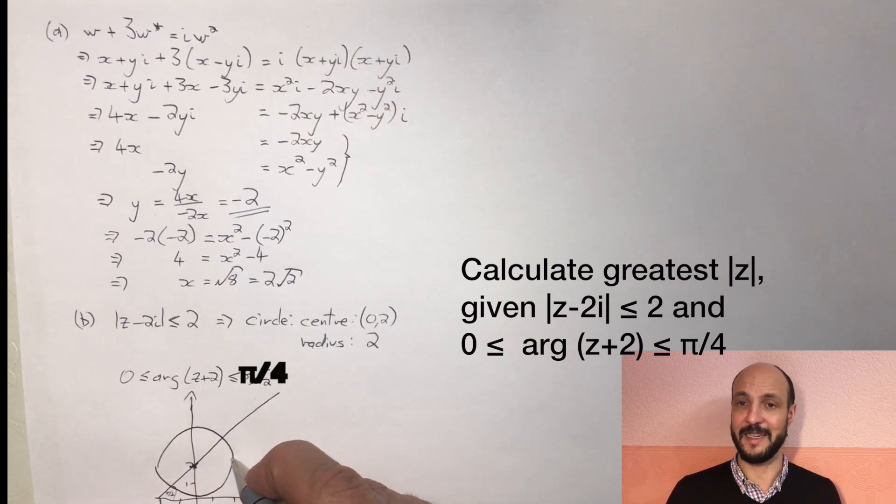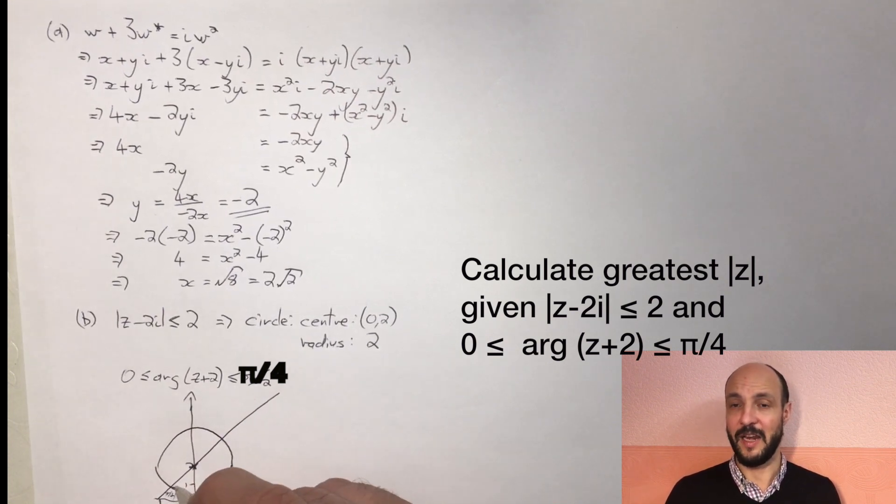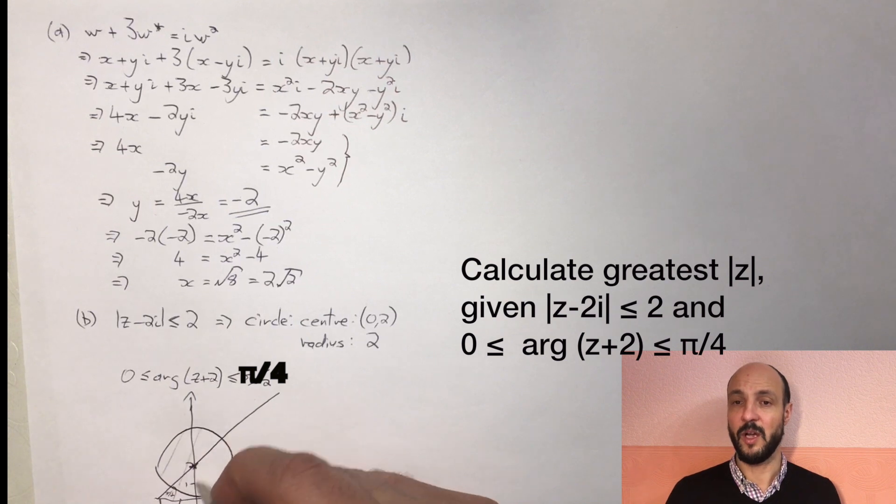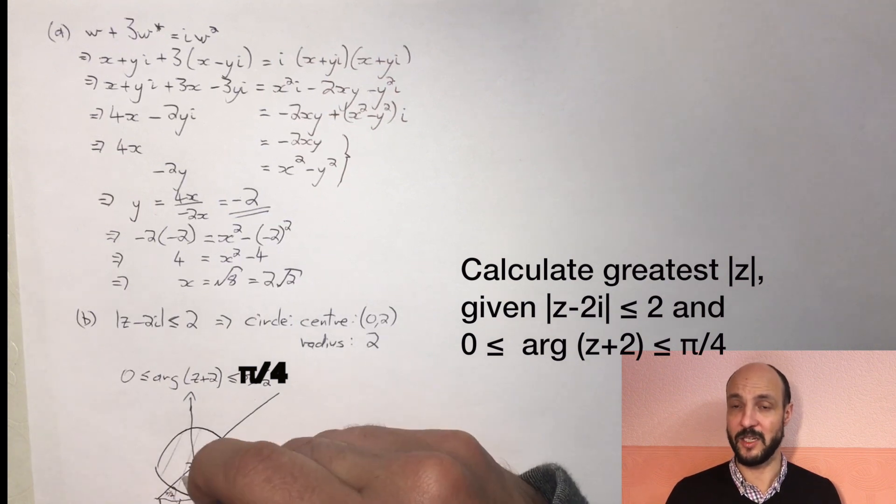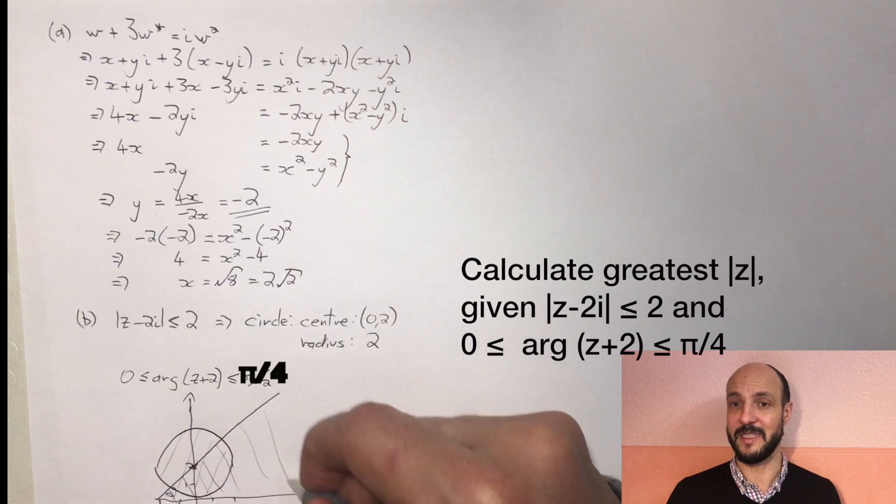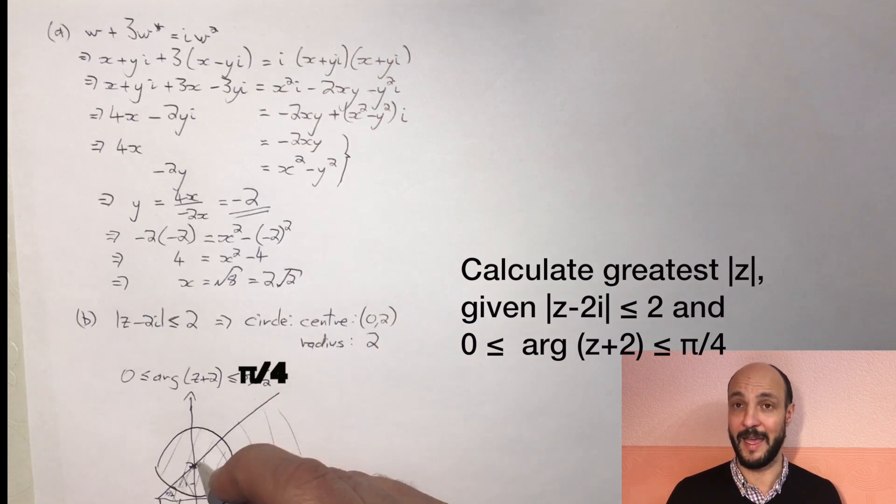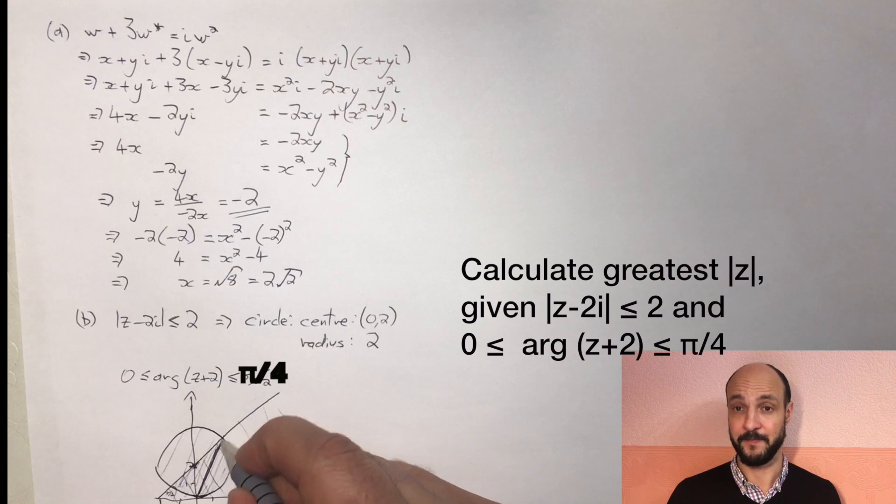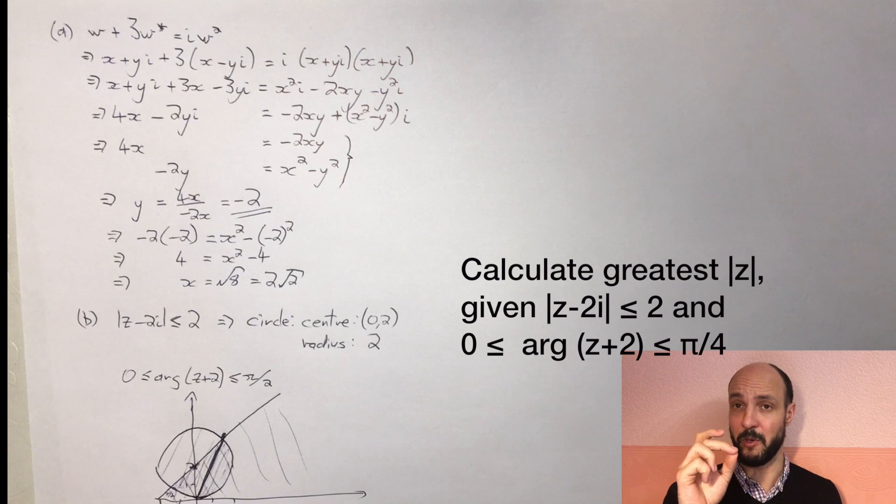So we draw this circle and this half line on the same graph, and if we look at the graph we want to know what's the largest magnitude of Z that we can have. So what that basically means is what's the furthest we can be away from the origin, what's the furthest we can be from zero zero that stay within this shaded region, within the circle and below the half line. Well if you look at the diagram I think it's pretty clear to see that we actually, our furthest point away is the intersection point of the circle with the line.